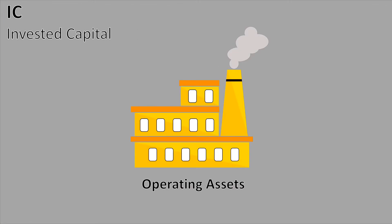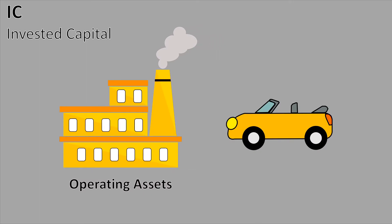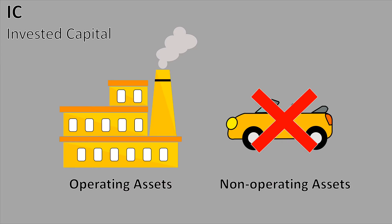Now let's have a look at Invested Capital. For visualization, let's go back to our yellow company from the beginning. What you see here represents the operating assets of the yellow company — a construction plant that has all the needed equipment and machinery to produce the products the company wants to sell. This might additionally include assets like Goodwill from an acquisition or working capital like inventories. All those are needed to achieve our NOPAT. All other assets — for example, a car the owner leased for the company which is used privately — is a non-operating asset, because it doesn't have an effect on NOPAT and so it shouldn't be included in the Invested Capital.